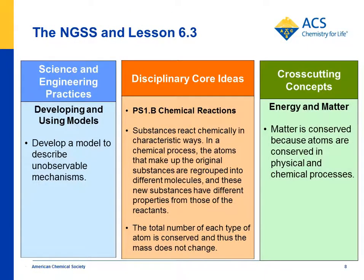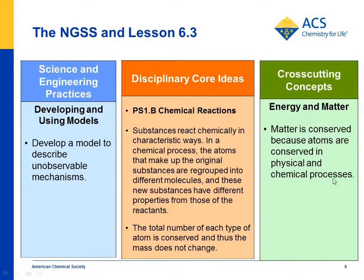Looking at the foundation boxes: students develop a model to describe unobservable mechanisms — they look at the chemical equation and use it as a model to see what must have happened in the chemical reaction. As for disciplinary core ideas, students see that substances react in characteristic ways and that the atoms making up the original substances are regrouped into different molecules with different properties, shown when they test the solubility of the precipitate and find it differs from either reactant. As a cross-cutting concept, matter is conserved because atoms are conserved in physical and chemical processes — in this case demonstrated through a chemical process.